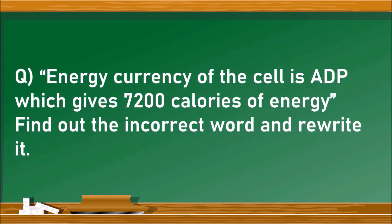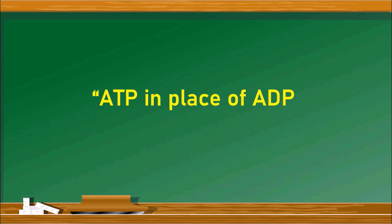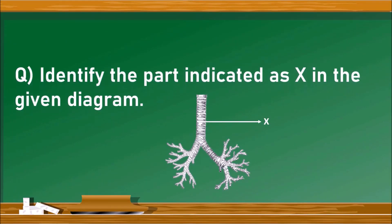The energy currency of the cell is ADP, which gives 7200 calories of energy — find the incorrect word and rewrite it. The incorrect word is ADP; the correct word is ATP.